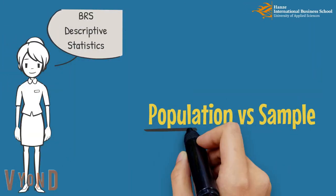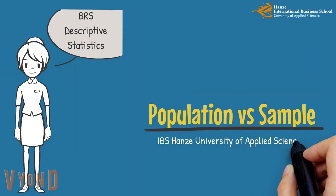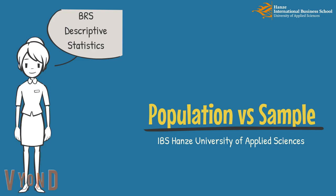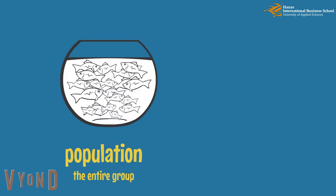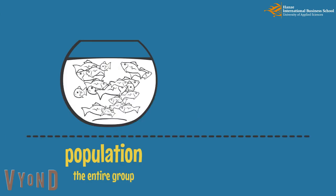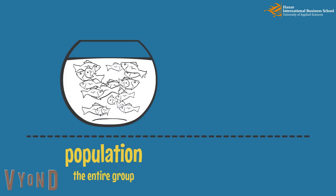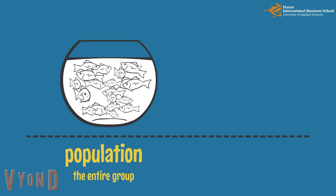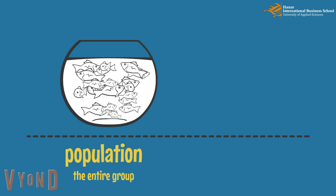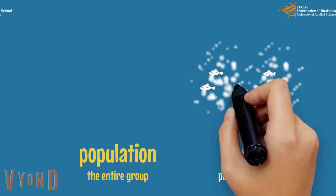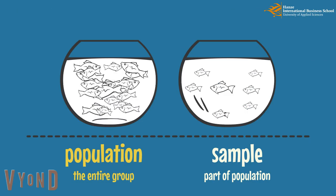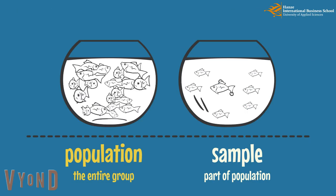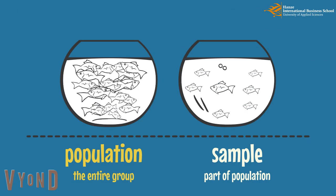Welcome to the BRS Descriptive Statistics. Our topic is about population and sample. In research, you frequently use the term population, and this refers to the entire group. Units selected from this entire group are called sample, so they are part of the population.